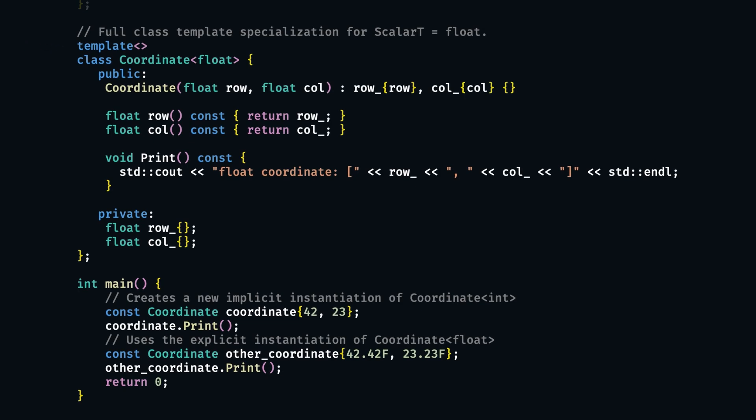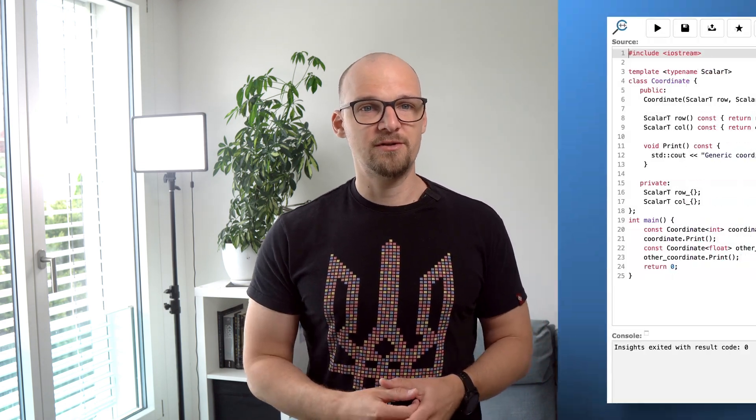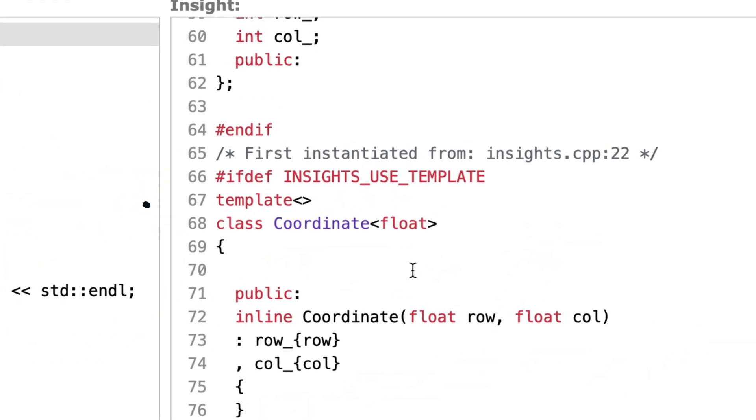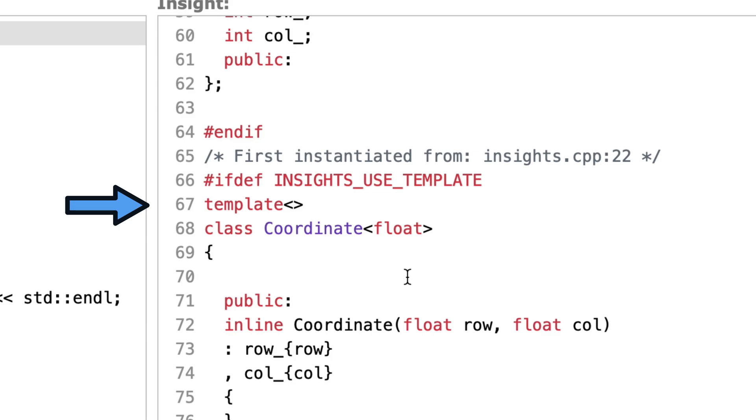Now, when we create a variable of this matching template instantiation, no implicit template instantiation is created by the compiler, and it reuses the explicit template instantiation that we provide manually. I encourage you to play around with this simple example, printing things from these classes' template specializations to get a better intuition about what is happening. Notice how this is very similar to what we saw in cppinsights.io before — the only difference is that now we force one of the specializations to be created explicitly.